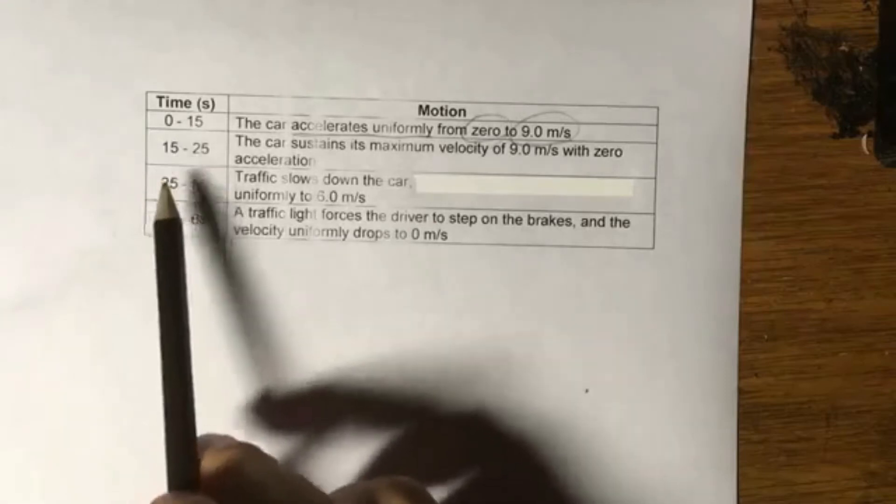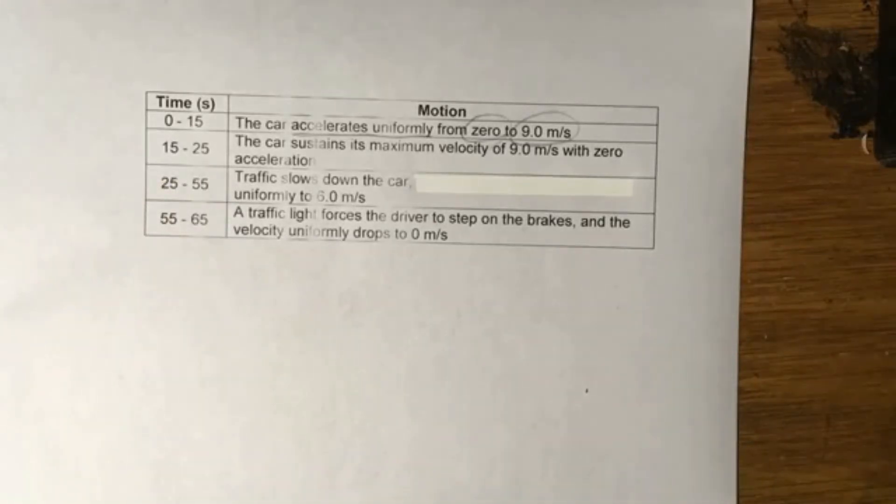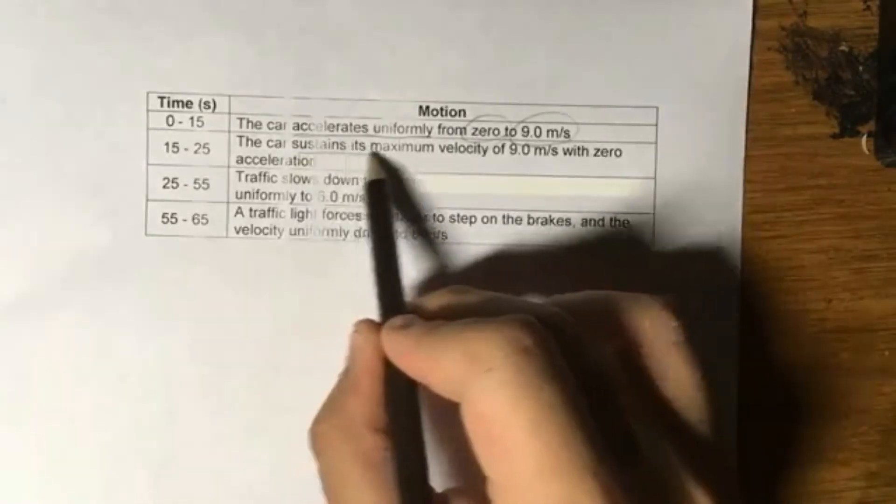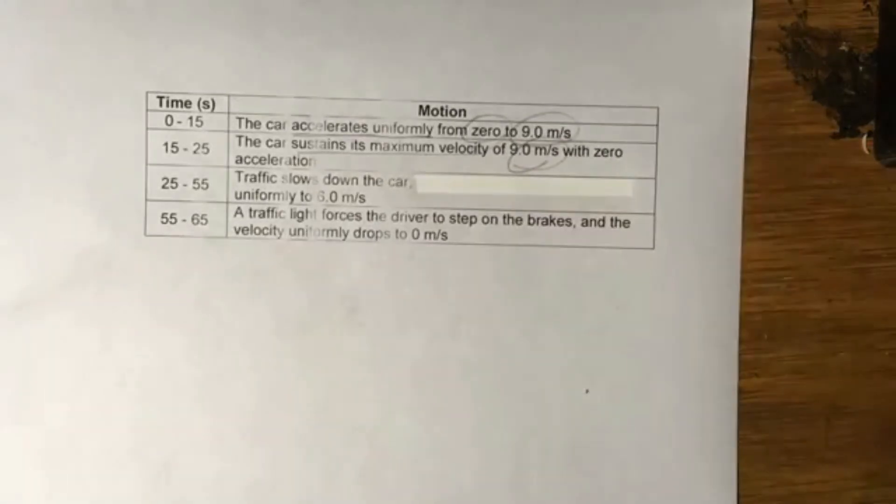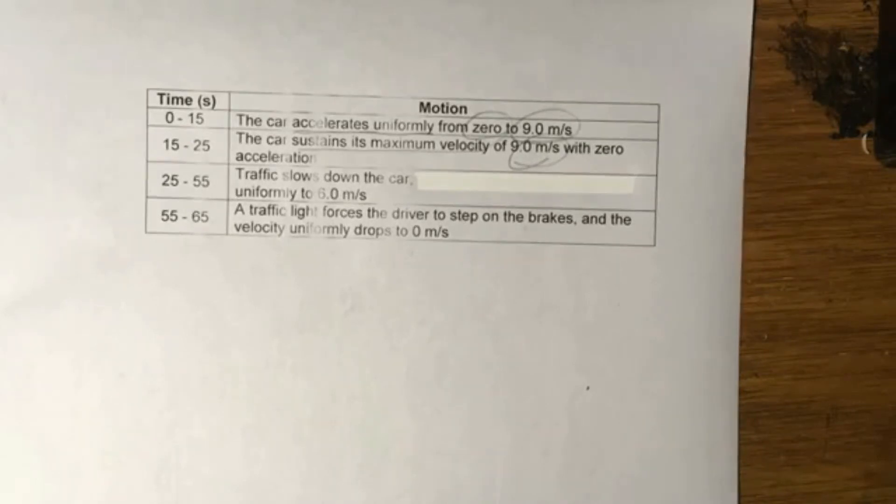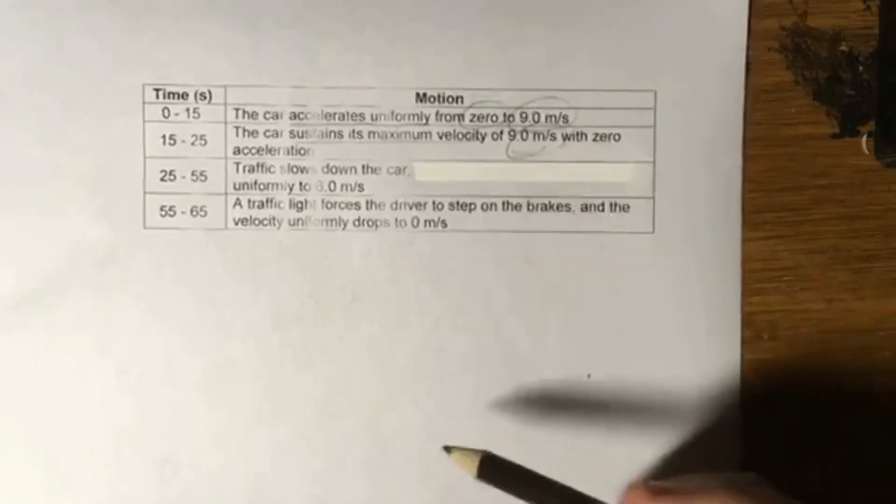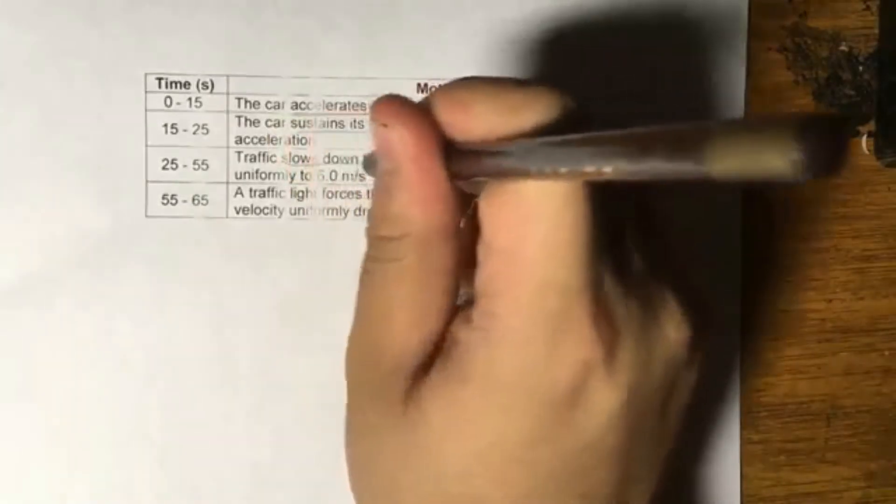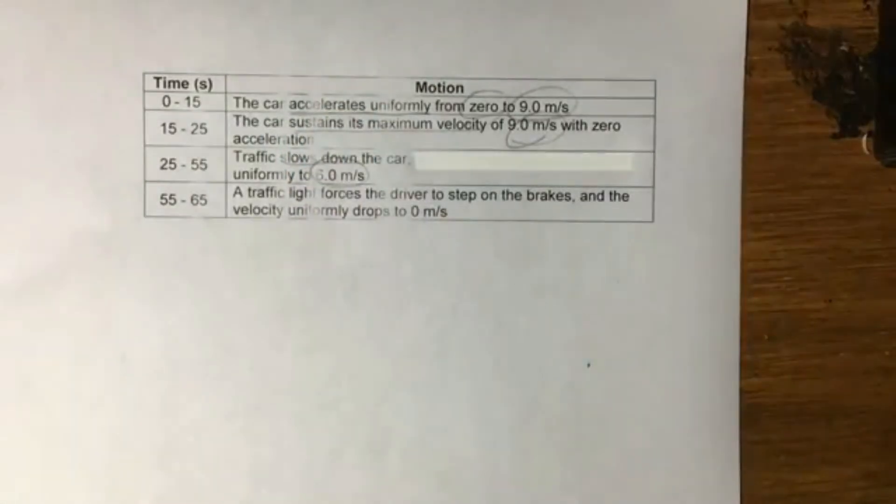Accelerates uniformly. So from 15 to 25, the car sustains a maximum velocity of 9 meters per second with zero acceleration. So sustained velocity at 9, keeps it there. 25 to 55, the traffic slows down the car uniformly to 6 meters per second.